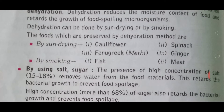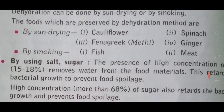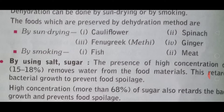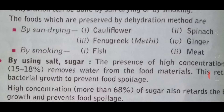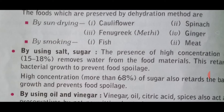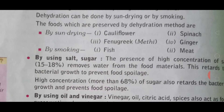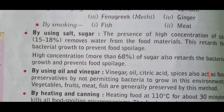The foods which are preserved by dehydration method are: by sun drying - cauliflower, spinach, fenugreek, and ginger. These green vegetables are preserved by the sun drying method. Cauliflower, spinach, fenugreek, and ginger are dried this way. By smoking method, fish and meat are preserved. Smoke is applied to preserve these food items.